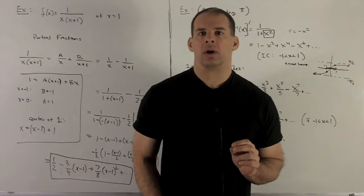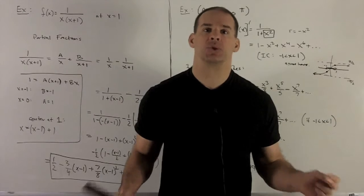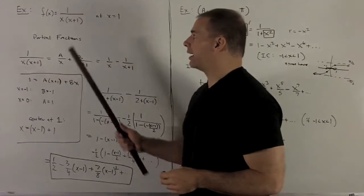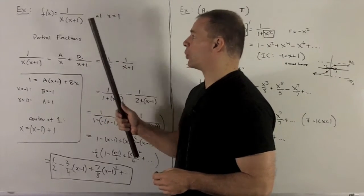Let's look at an example now where we try to get our power series. We have to actually combine two power series back to get what we want. So let's try f of x equals 1 over x times x plus 1.